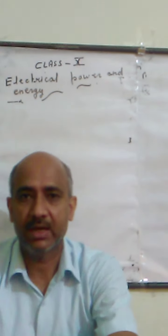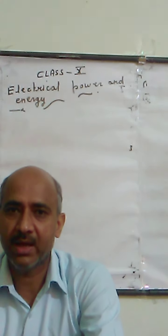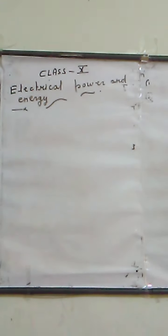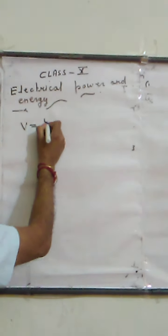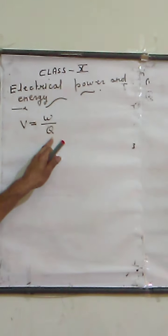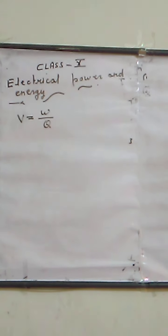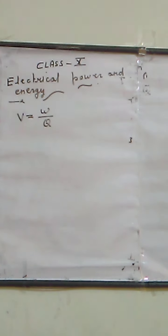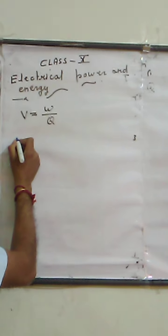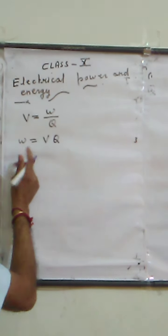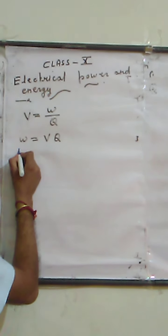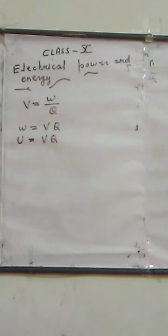What is electrical energy? We have a simple formula: V equals W upon Q, where V is potential difference, Q is the charge, and W is the work done. When we talk about energy, this W is stored in the body in the form of electrical energy. So from here we can see that W equals VQ, or we can write U equals VQ. So electrical energy means U equals VQ.